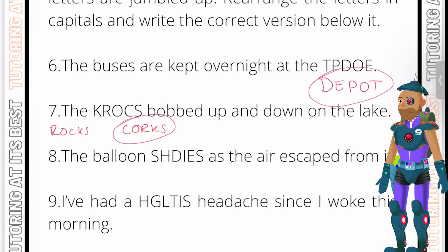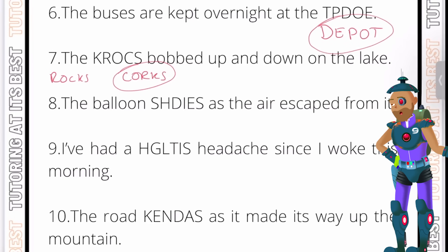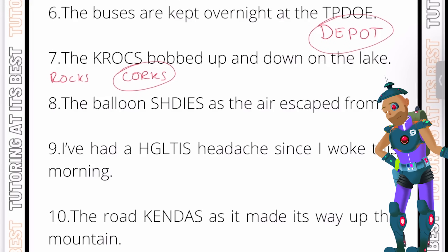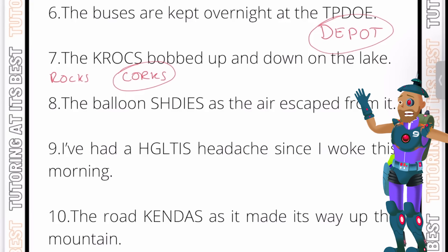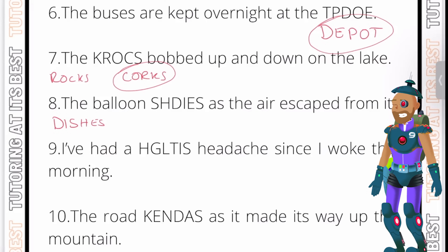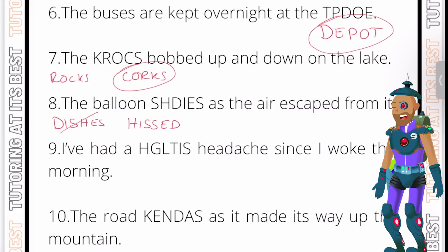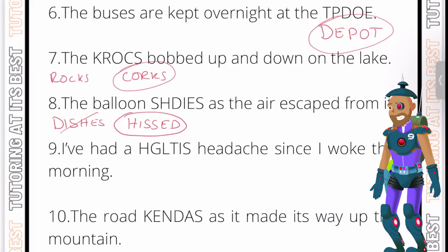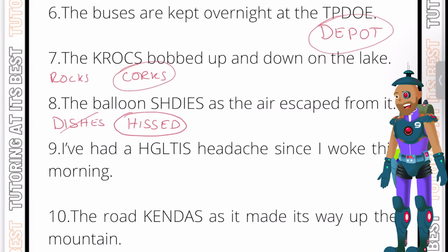I hope you're finding this useful. Question eight: the balloon something as the air escaped from it. Something happened to the balloon as the air escaped. We can make the word 'dishes' but that doesn't relate to the context. We can also make the word 'hissed' — the balloon hissed as the air escaped from it. And there we are.